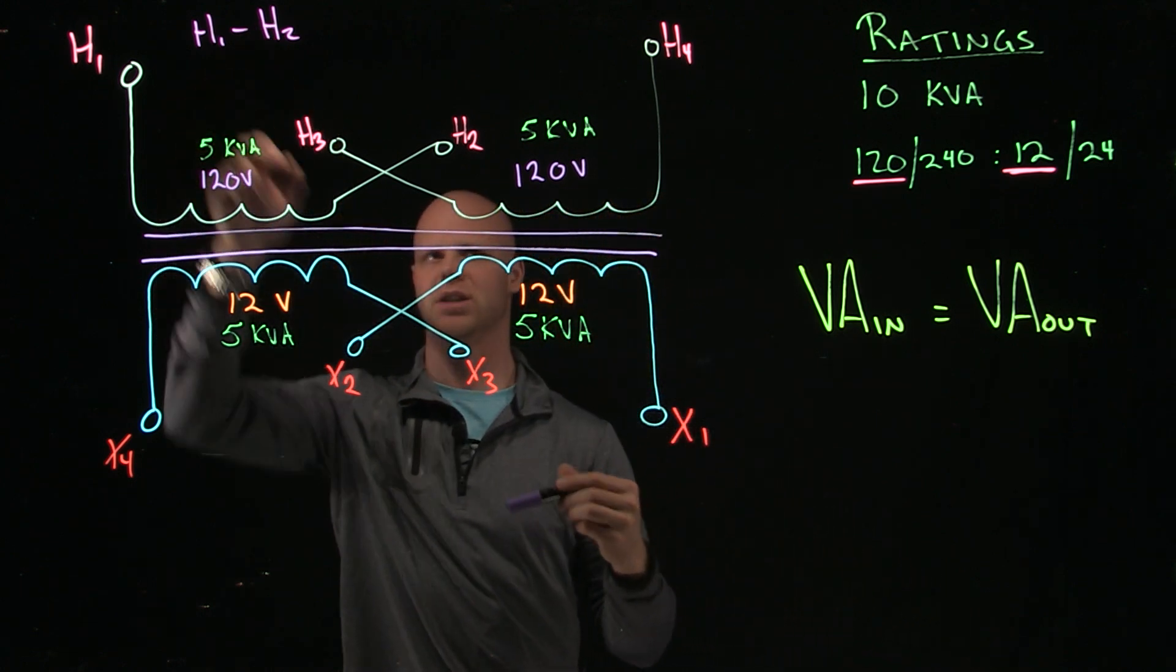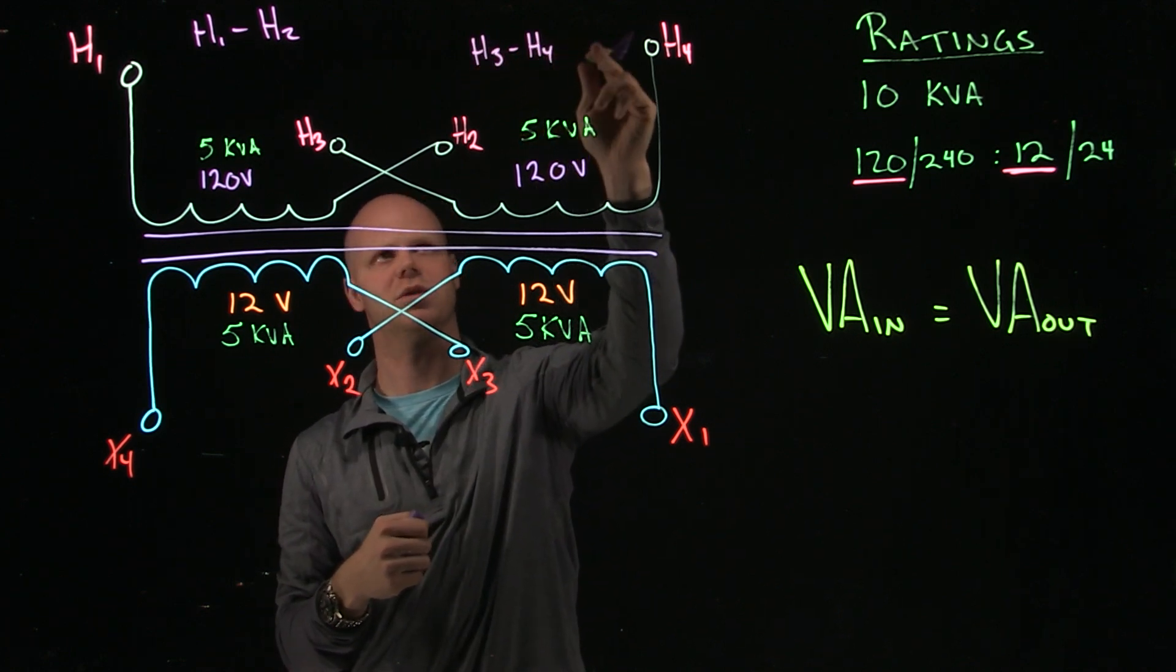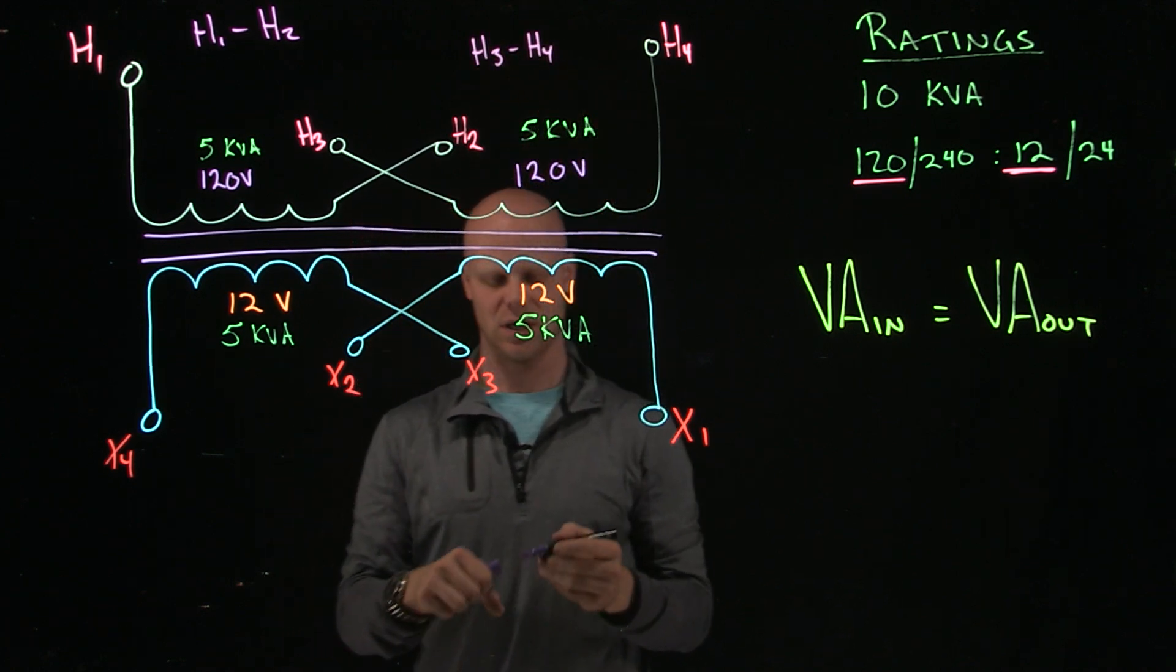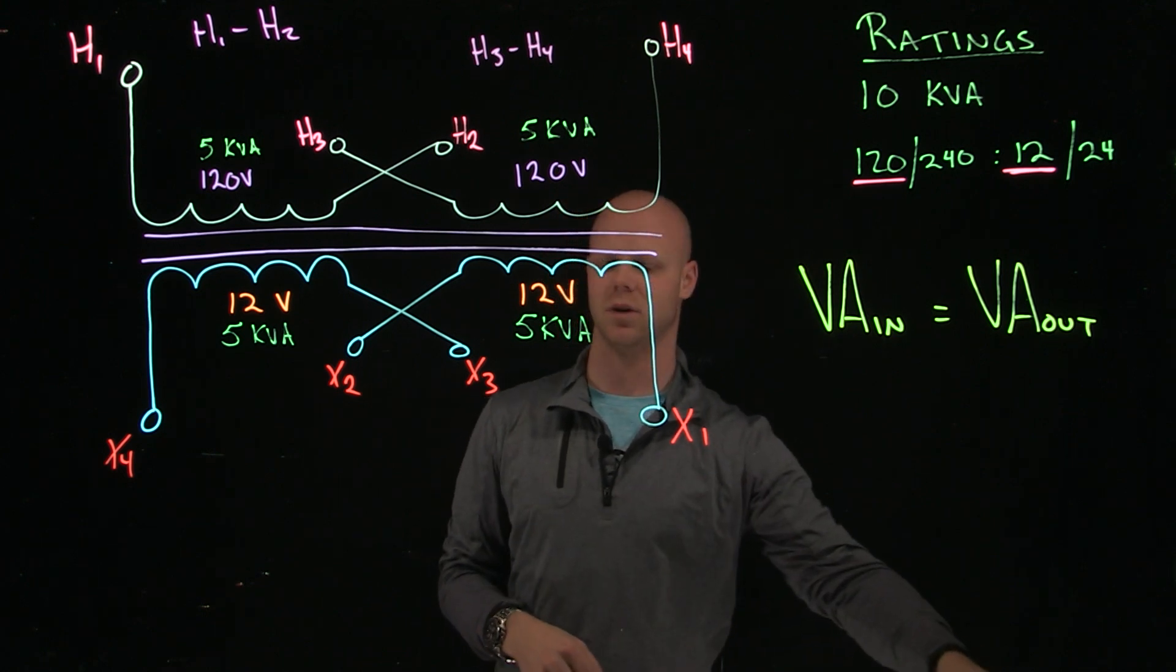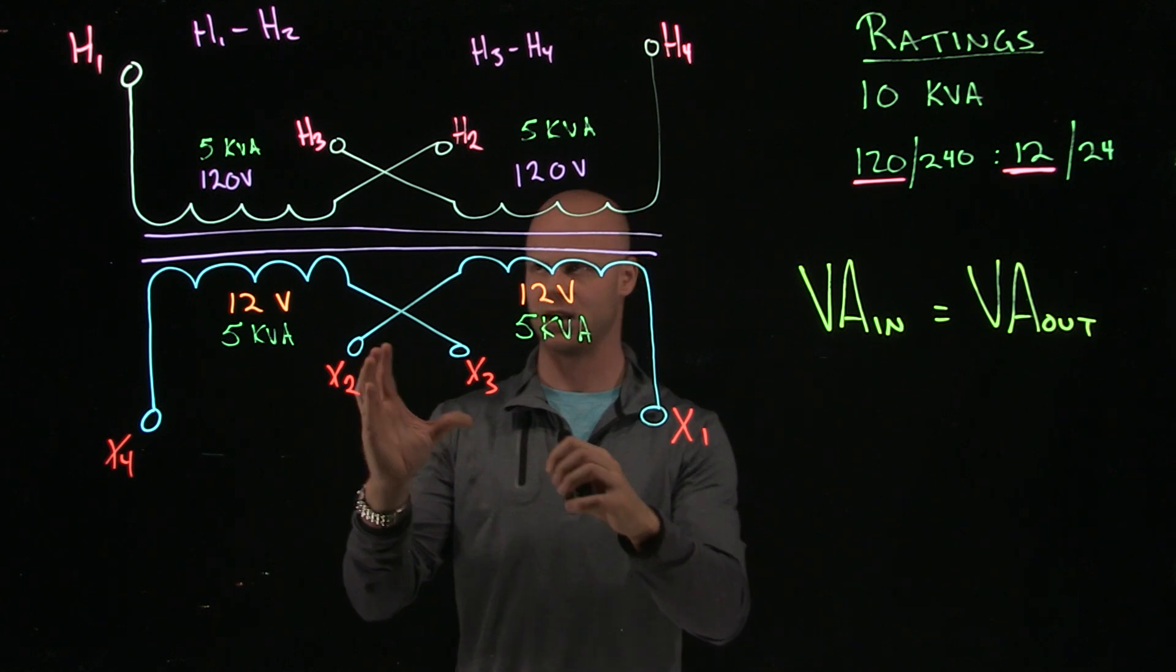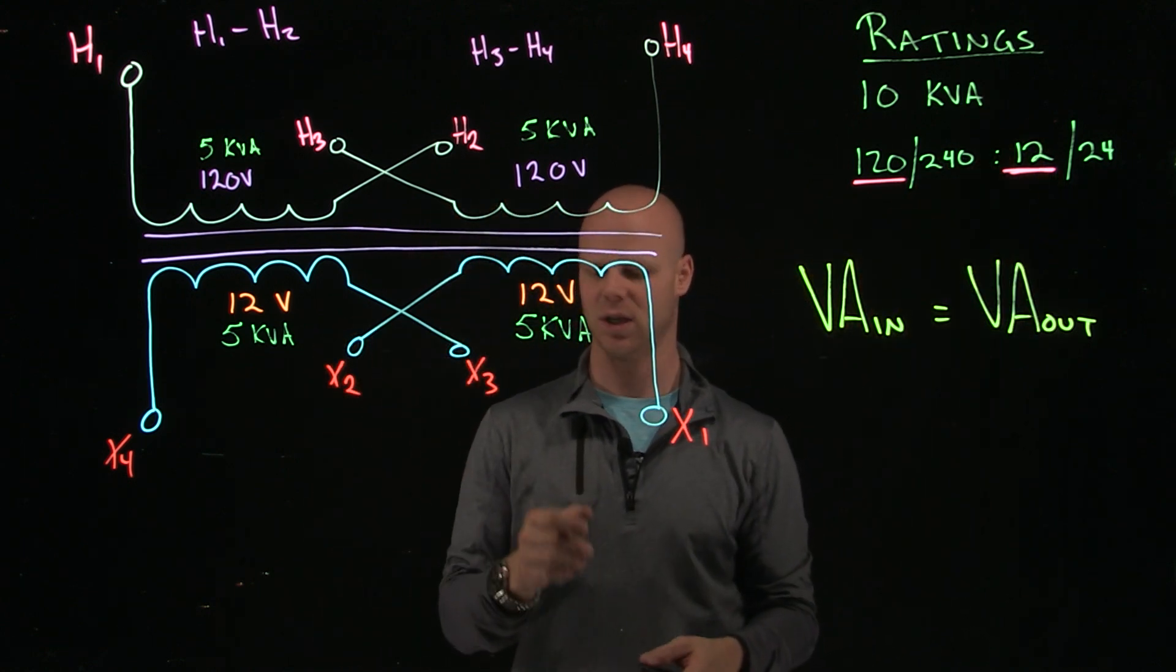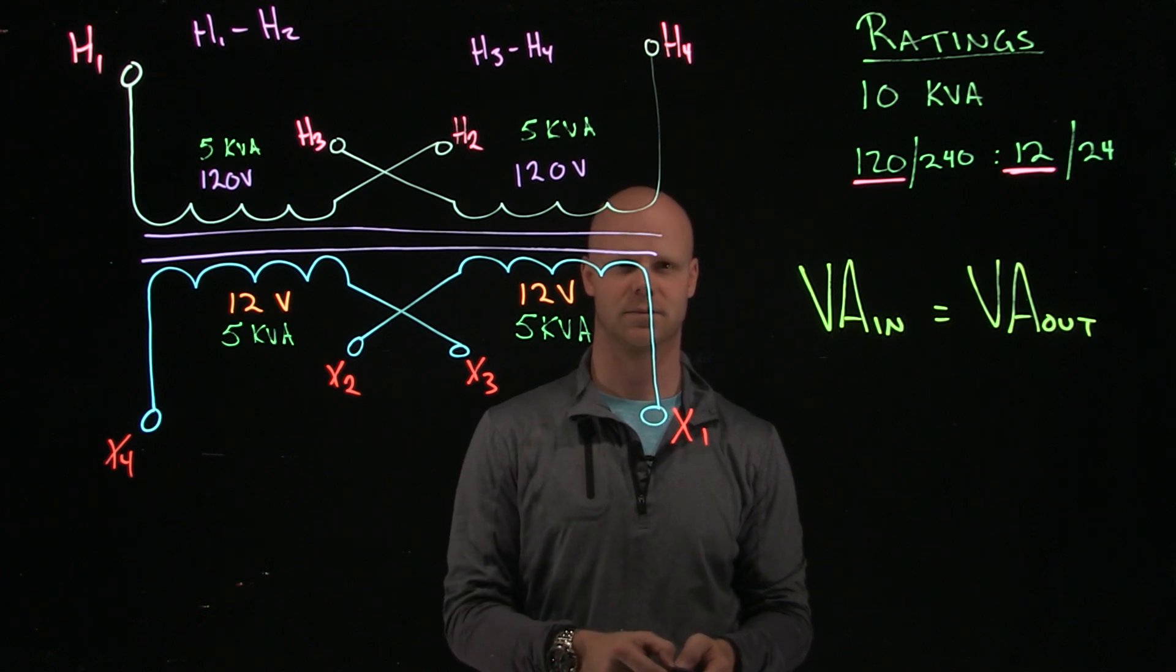So H1 to H2, these would be its ratings. H3 to H4, this would just be the one rating or the rating of that one winding. So I hope this has helped, just to look at individual windings, how I can rate that nameplate value to one winding. We'll see you in the next one.